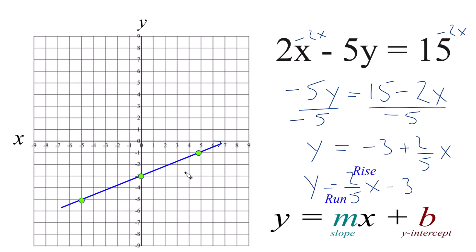Then we'll put arrows to show that this goes to infinity. That is the graph for 2x minus 5y equals 15. If you use the table of values, you get the same graph. This is Dr. B graphing 2x minus 5y equals 15. Thanks for watching.